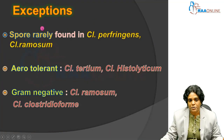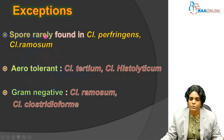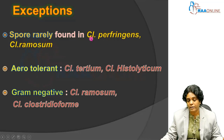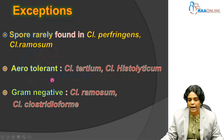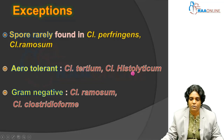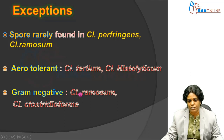There are some exceptions. Some Clostridium form spores rarely — for example Clostridium perfringens; they produce spores but you can rarely appreciate them, as well as Clostridium ramosum. Some of these species are aerotolerant — they can tolerate a little amount of oxygen — which includes Clostridium tertium and Clostridium histolyticum. And some of them are gram-negative in nature, or gram-variable, for example Clostridium ramosum.